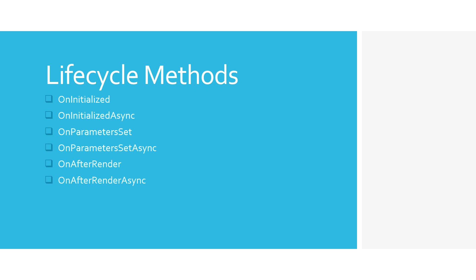There are two more functions. One is ShouldRender — you can override this function and it gets called when you change the state of your page. You can also call StateHasChanged, which will trigger the ShouldRender event. After that, the page gets rendered and then it calls OnAfterRender and OnAfterRenderAsync again. This way you can reload your UI components — for example, if your dropdown hasn't been filled.